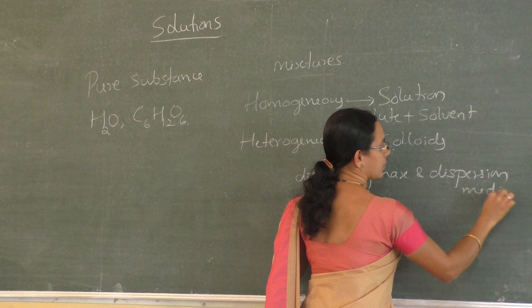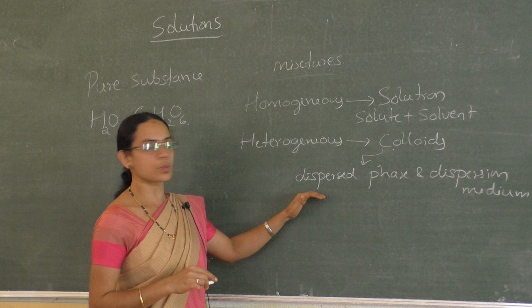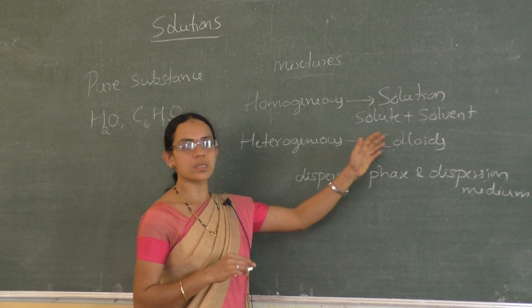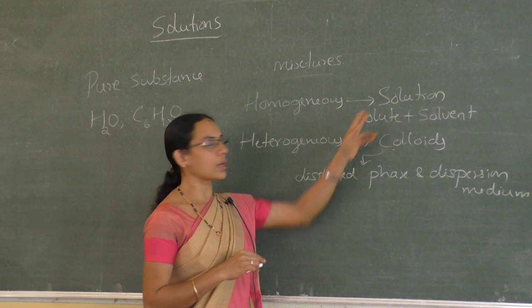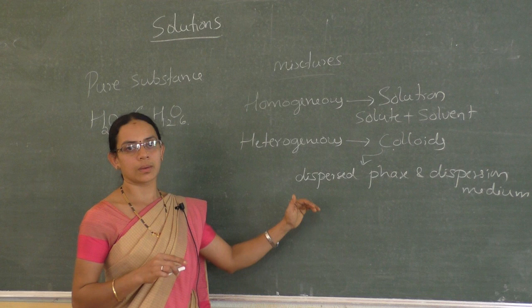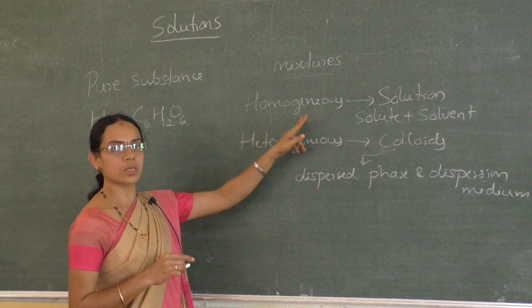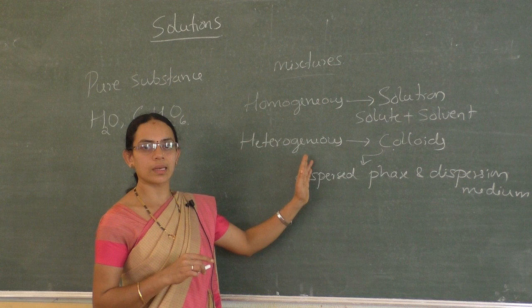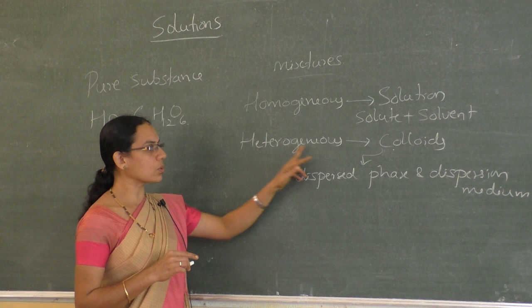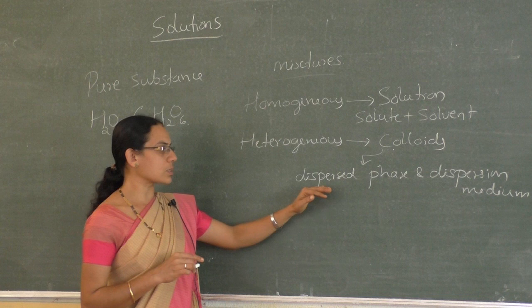The main difference between solution and colloids is their particle size. In colloids, the particle size is between 1 nanometer to 1000 nanometers, whereas in solution the particle size is less than 1 nanometer. If the particle size is less than 1 nanometer, it becomes a homogeneous mixture and we call it a solution. If slightly larger, it is a heterogeneous mixture with components called dispersed phase and dispersion medium.